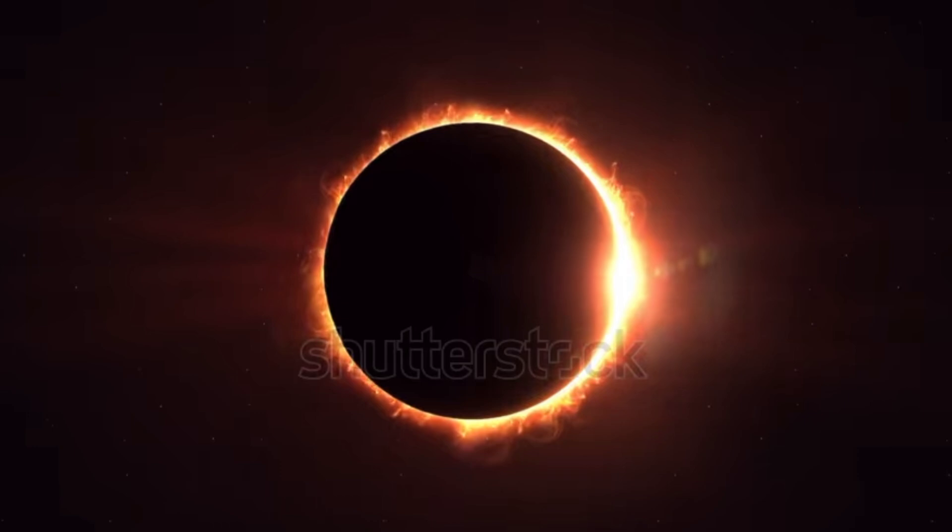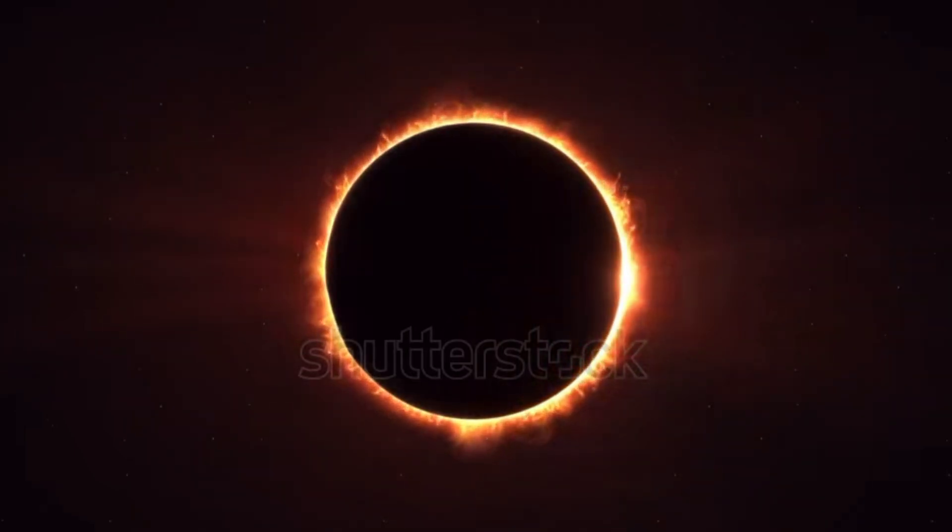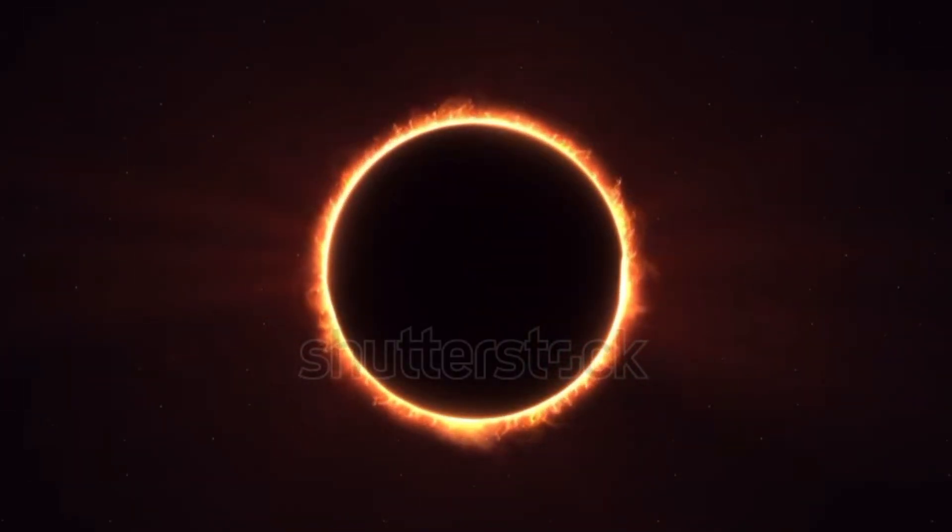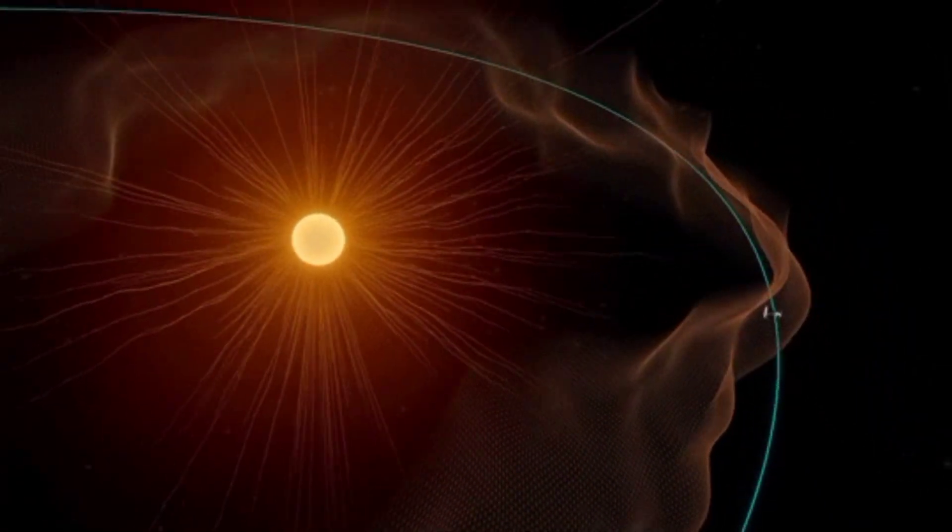In a total eclipse, the Moon completely covers the Sun, exposing the Sun's outer atmosphere, the corona, in all its glory.